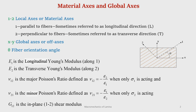As a quick revisit: the direction parallel to the fiber is axis 1, also called the longitudinal direction, and perpendicular to the fiber is axis 2, also known as the transverse direction. The 1-2 system is known as the local or material axis, while x-y is the global axis convenient for analysis. The angle between x and 1, denoted θ, is the fiber orientation angle.